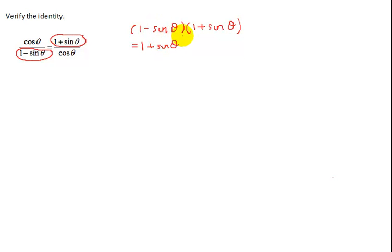Inner: minus sine theta times 1 is minus sine theta. And last term: negative sine theta times sine theta is negative sine squared theta. Whenever you multiply conjugates, the inner two terms will always cancel out and you'll get 1 minus sine squared theta. You'll get the difference of two squares: this term squared minus that term squared.